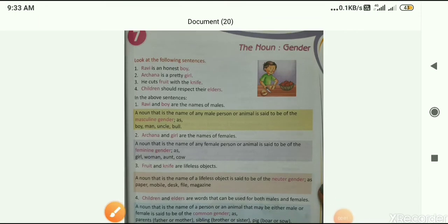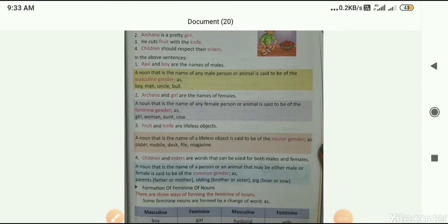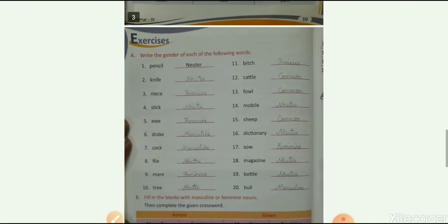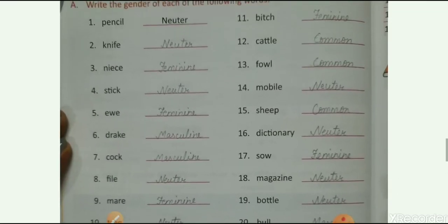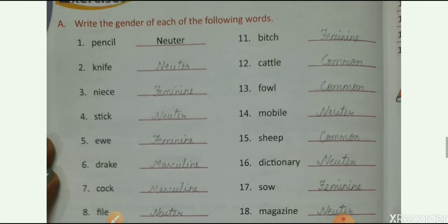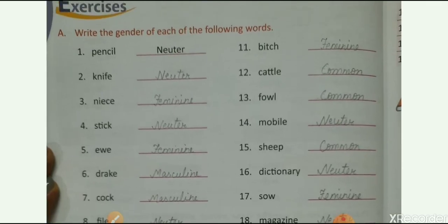So explanation part is already completed. So let's move to our exercise part. Now, exercise A, write the gender of the following words. As you can see here, words are given to you. You have to tell the gender of these words. So first one is pencil. So gender of pencil is neuter. So it is already written here.